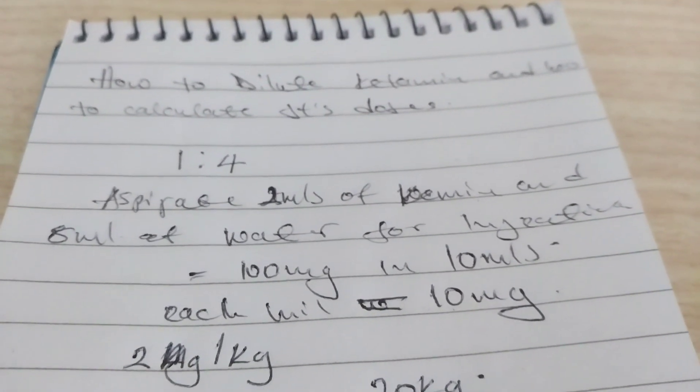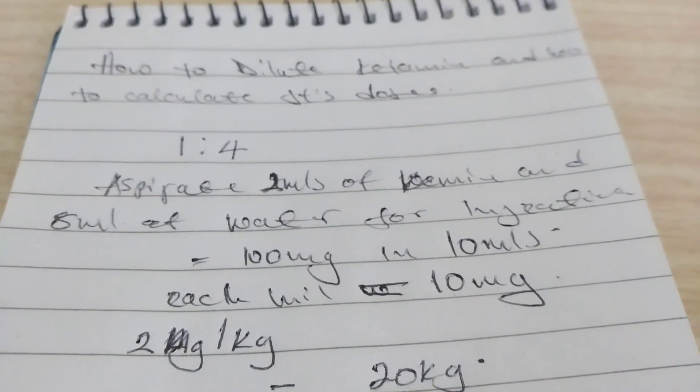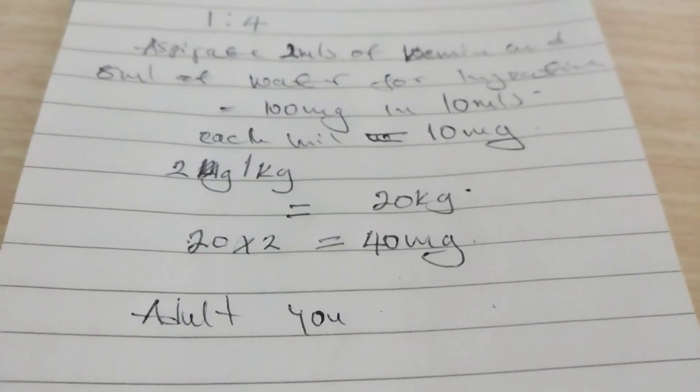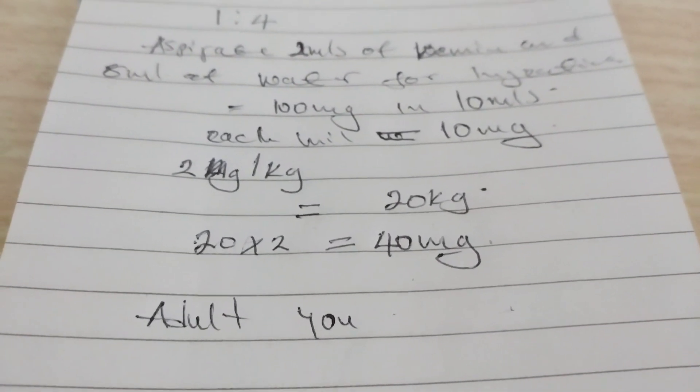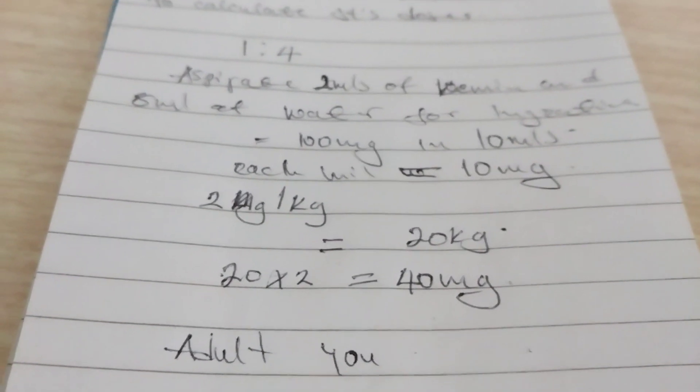That will make 100mg, which means each ml will contain 10mg. To calculate the mg needed per person, we use 2mg per kg body weight.